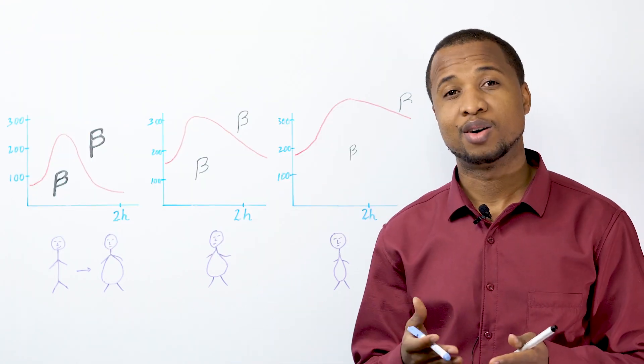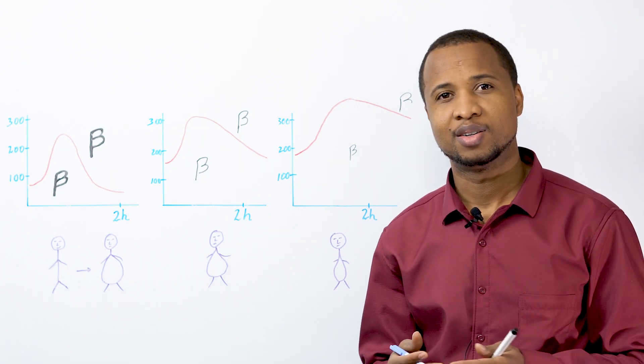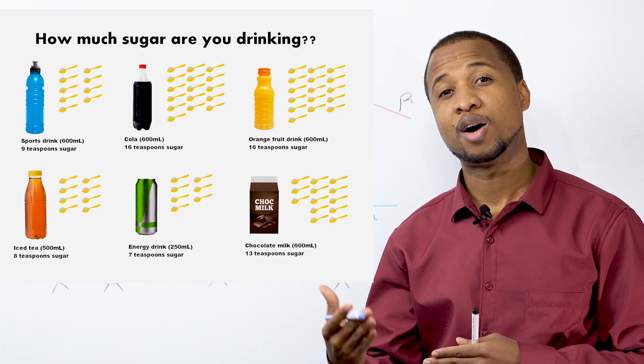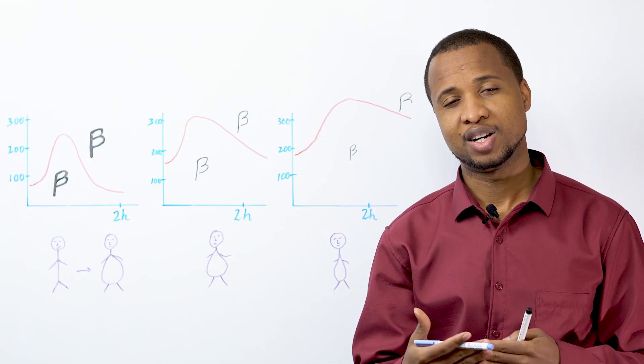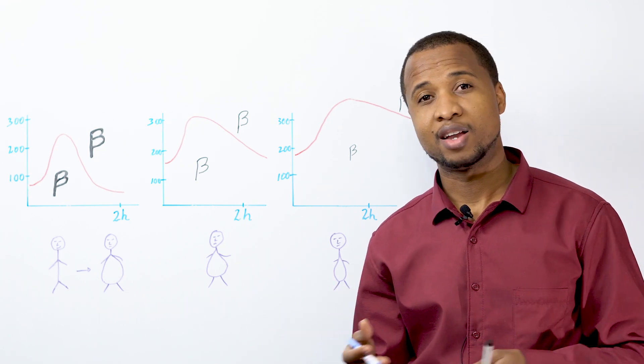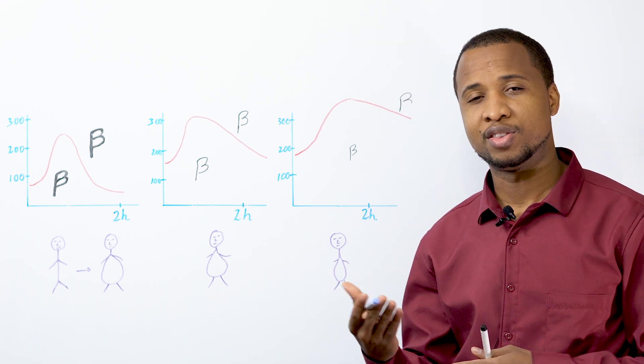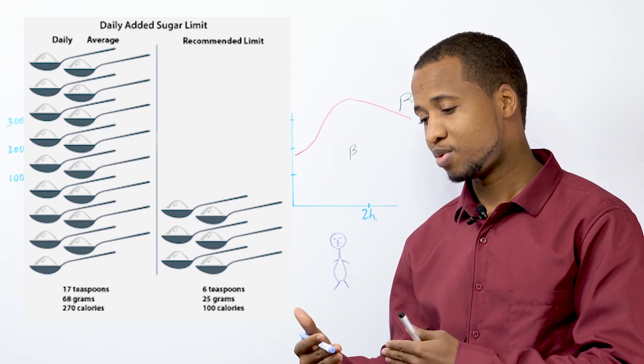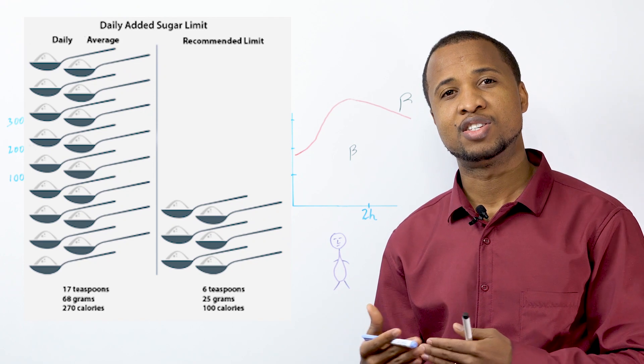You might say oh thank God I don't eat sugar, but do you know how much sugar you are eating without knowing, how much sugar is added in the things that you eat? In some countries, for safety reasons I will not mention the names, they're eating on average 17 teaspoons of added sugar every single day.